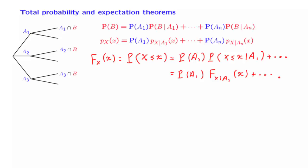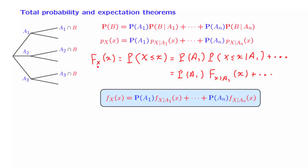Now, we know that the derivative of a CDF is a PDF. We also know that any general fact that applies to ordinary models will also apply without change to a conditional model, because a conditional model is just like any other ordinary probability model. So let us take derivatives of both sides of this equation. On the left-hand side we have the derivative of a CDF, which is a PDF. On the right-hand side, we have the probability of the first scenario and then the derivative of the conditional CDF, which is the conditional PDF. So we use here the fact that derivatives of CDFs are PDFs, and then we have similar terms under the different scenarios.